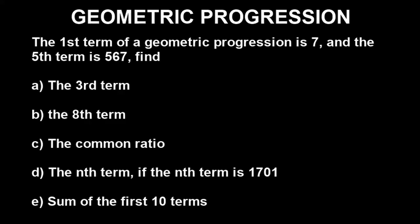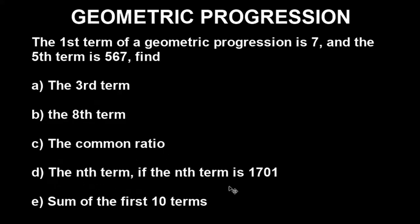The question says: the first term of a geometric progression is 7 and the fifth term is 567. Find: (a) the third term, (b) the eighth term, (c) the common ratio, (d) the nth term if the nth term is 1701, and lastly the sum of the first 10 terms.